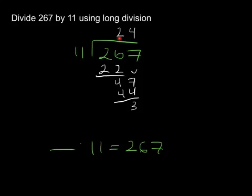Because whatever's left over is going to be 3. So I can't multiply 11 by 24 to get 267. I've got to multiply it by something a little more than 24. That's because the true number of times that 11 goes into 24 is 24 and 3 elevenths.